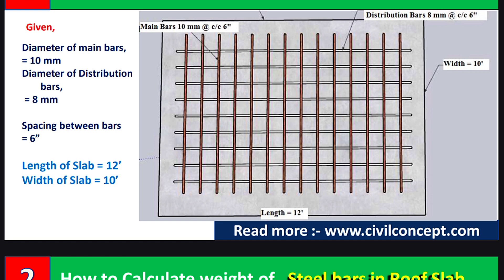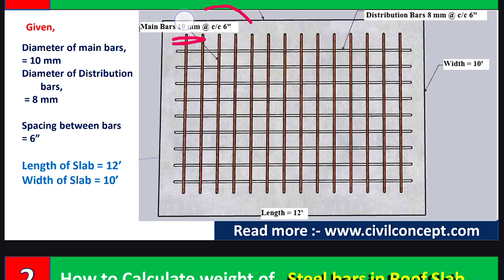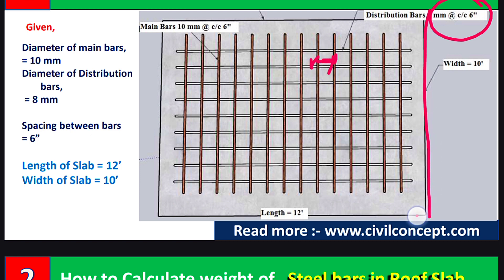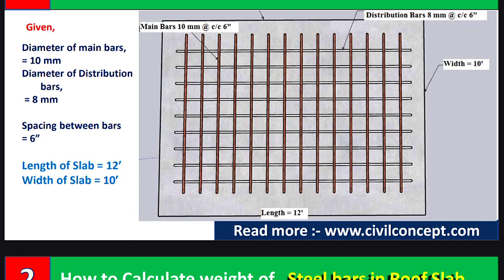The vertical bars are main bars, which are 10 mm, and the center-to-center distance is 6 inches. The distribution bars are 8 mm and their center-to-center spacing is also 6 inches. The width of the slab is 10 feet in one direction and 12 feet in the other direction.